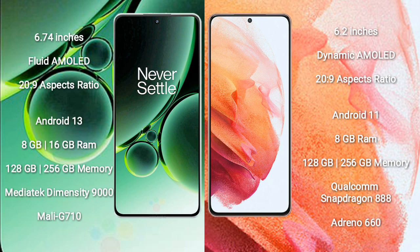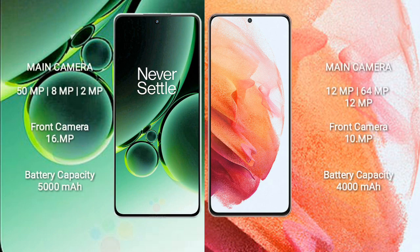OnePlus Nord 3 comes with 8GB or 16GB RAM and 128GB to 256GB internal storage, with a MediaTek Dimensity 9000 processor and Mali-G710 GPU. Samsung Galaxy S21 comes with 8GB RAM and 128GB to 256GB internal storage, with a Qualcomm Snapdragon 888 processor and Adreno 660 GPU.